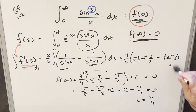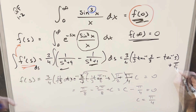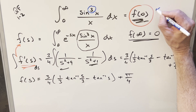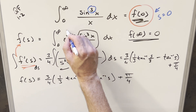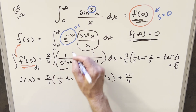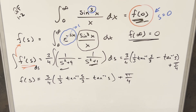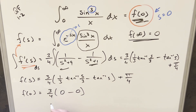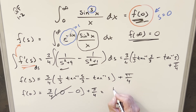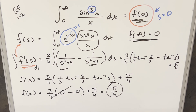Plugging C back in, we have f(s) = (3/4)[(1/3) arctan(s/3) − arctan(s)] + π/4. Now we evaluate at s = 0 to get back to our original integral. arctan(0) = 0 and arctan(0/3) = 0, so both arctan terms vanish, and we're just left with the constant. The final answer is π/4. Good one today from MIT 2024 — thanks everyone for watching!